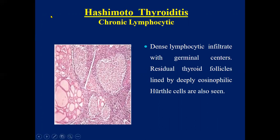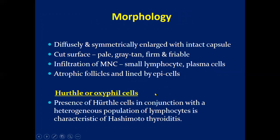In Hashimoto's thyroiditis, there is diffuse dense lymphocytic infiltrate with germinal centers. Residual thyroid follicles are lined by deeply eosinophilic Hürthle cells. Morphologically, the thyroid is often diffusely enlarged, though more localized enlargement may be seen in some cases. The capsule is intact, and the cut surface is pale, gray, firm, and fibrous.